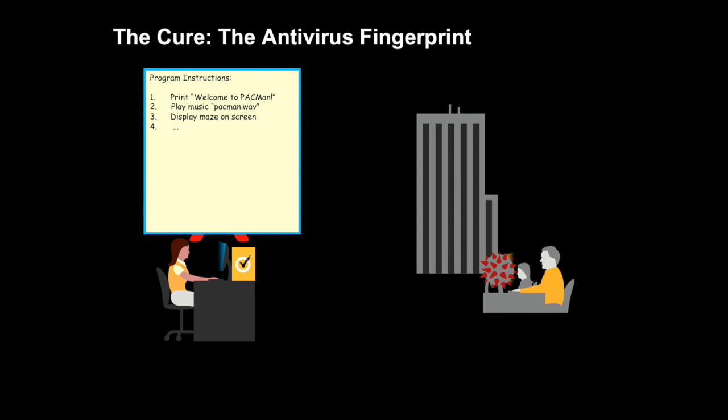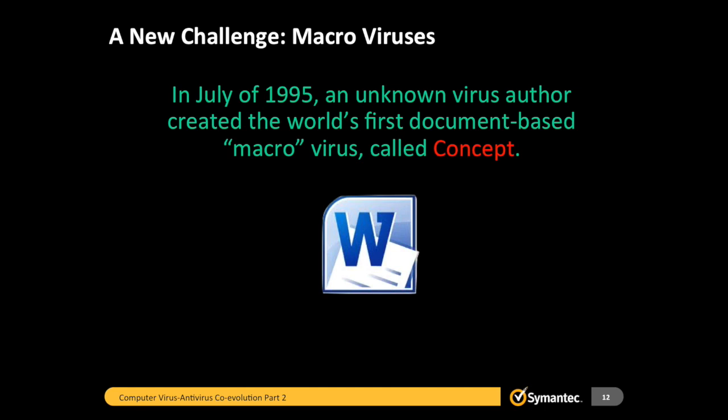That's sort of how it worked back then — all manual, humans looking at these viruses, creating disassemblies, identifying the machine language instructions, adding them to the fingerprint databases. After a couple of years I started working full-time at Symantec. I want to tell you about another type of computer virus: the macro virus. It's a special type that infects documents and spreadsheets — PowerPoint presentations — instead of traditional program files like Pac-Man. In July of 1995 we saw the first macro virus, called Concept, probably because it was a proof of concept. We don't know who created it, and this virus infected documents.